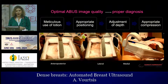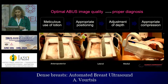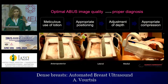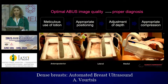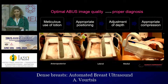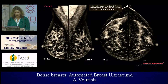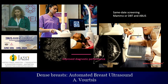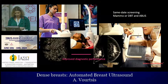It is important to apply meticulous application of lotion to the entire area covering the breast, to have appropriate positioning, and to adjust the depth — which differs for thin versus larger breasts. Appropriate compression is also key; we have three different levels depending on whether there are many cysts or whether the breast is dense. It is also important to correlate ABUS findings with mammographic or DBT findings on the same day, as this provides higher diagnostic accuracy.